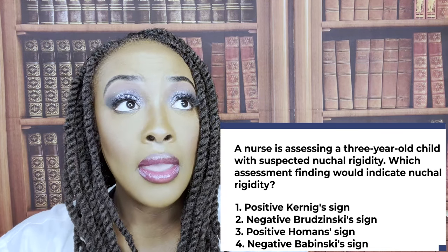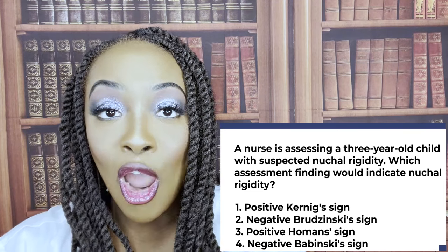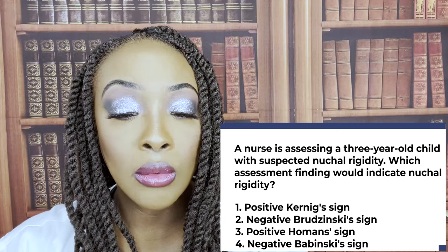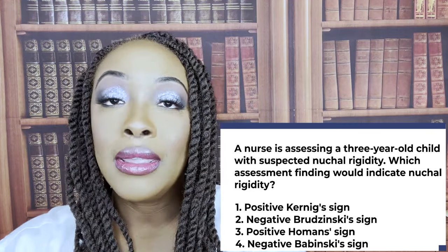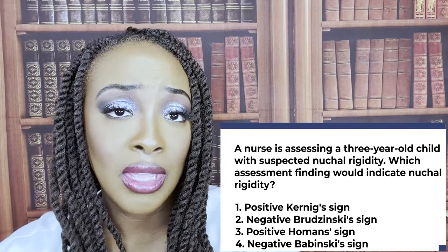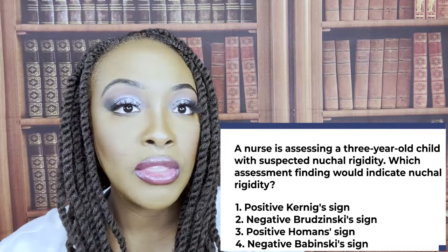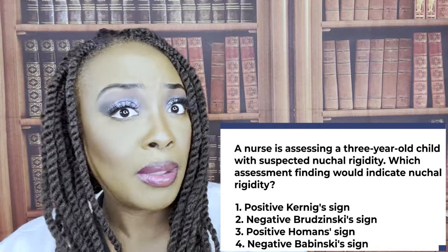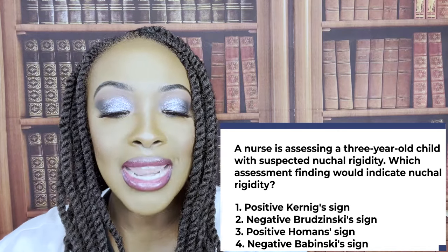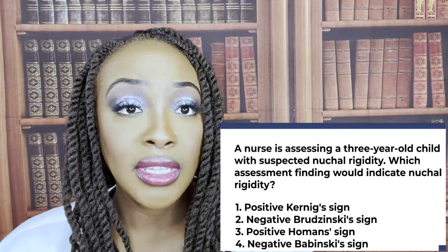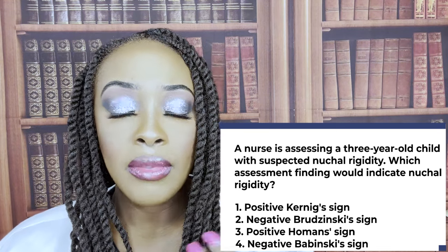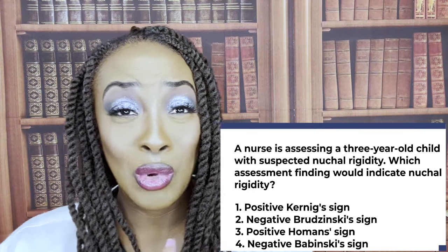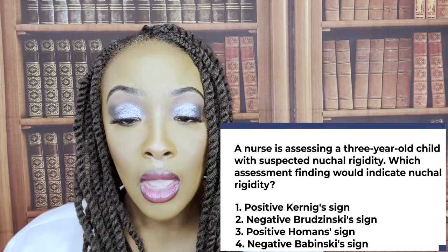Choice two — negative Rudinsky sign. The Rudinsky sign shows nuchal irritation. Since we're already thinking this patient most likely has meningitis, that Rudinsky sign would be positive, not negative. Choice three — positive Holman sign indicates possible DVT; that has nothing to do with nuchal rigidity or meningitis. Choice four — negative Babinski sign is expected after one year of age and shows no neurological deficits. So the correct answer is one, positive Koenig sign.